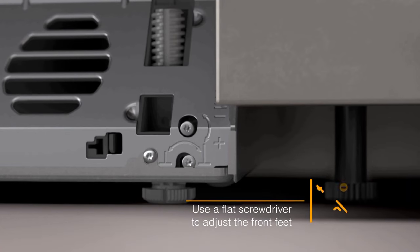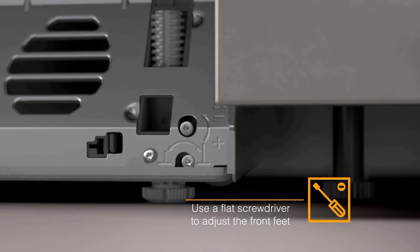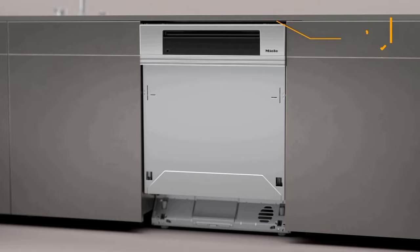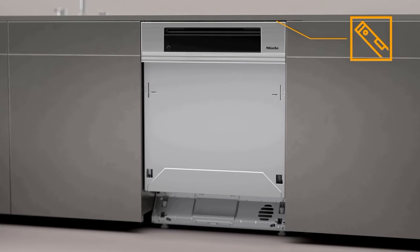Now, let's raise the front legs by using a flat tip screwdriver. Use the flat tip of the screwdriver to insert it to the base of the foot notches and turn as needed. Make sure the front of the dishwasher is level, so it meets the underside of the front counter.